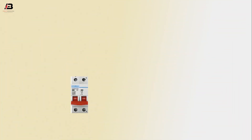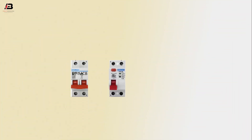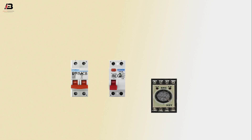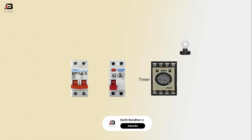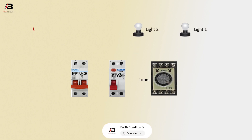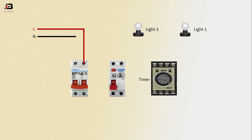So viewers, let's start. Components: DP MCB circuit breaker, RCCB circuit breaker, timer, light one, light two. Phase connection input to DP MCB circuit breaker, neutral connection input to DP MCB circuit breaker.